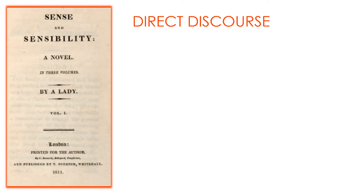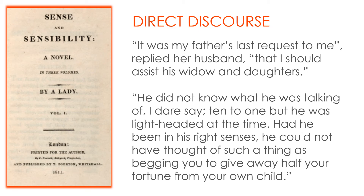Looking first at direct discourse — where the words are actually quoted, straightforward speech — this example is from John and Fanny discussing his father's dying wish: 'It was my father's last request to me,' replied her husband, 'that I should assist his widow and daughters.' 'He did not know what he was talking of, I dare say. Ten to one he was but light-headed at the time. Had he been in his right senses, he could not have thought of such a thing as begging you to give away half your fortune from your own child.' The irony, of course, is that they would never dream of depriving their own child, while depriving his father's children.